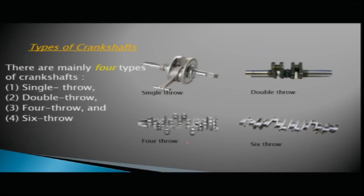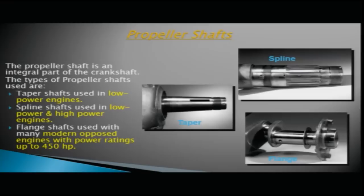Coming to propeller shafts: the propeller shaft is an integral part of the crankshaft and is where you mount your propellers. There are various types: tapered shafts, spline shafts — which have various splines on the shaft — and flange shafts.